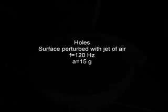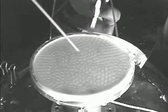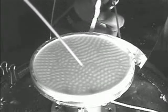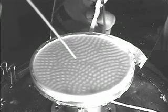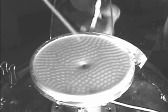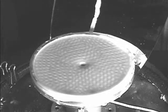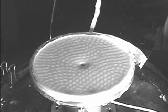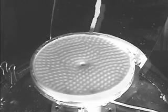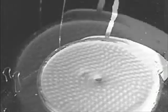Now we're going to shake the mixture with a fixed frequency and acceleration and apply a small puff of air. The puff of air creates an indentation. That indentation grows to a hole and it just sits there — the hole doesn't disappear. Here's a close-up showing that the hole actually penetrates the entire layer.